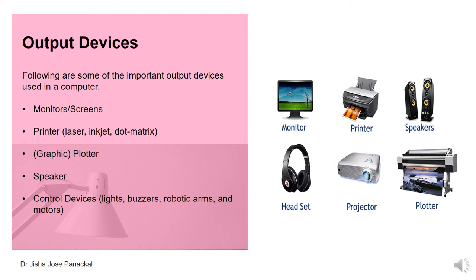Then there are speakers and other control devices such as lights, buzzers, robotic arms, and motors. Buzzers are usually used along with quiz competitions — you may have seen them in quiz programs where participants press the buzzer. They can also be used as light control devices. These are all used as output devices, and the figure also shows some of the output devices.